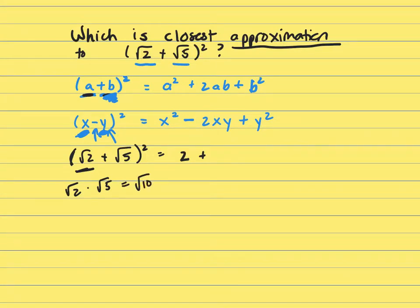But you need to double it. So that's going to be 2 times square root 10. Plus, square your last term, square root 5, and that gives you 5. So 2 plus 5 is 7, plus 2.